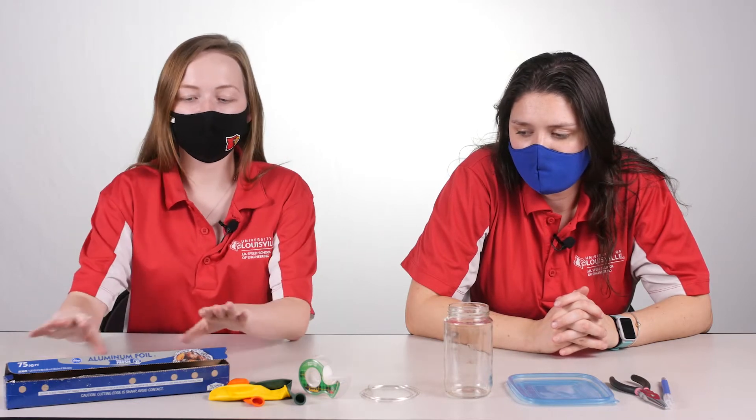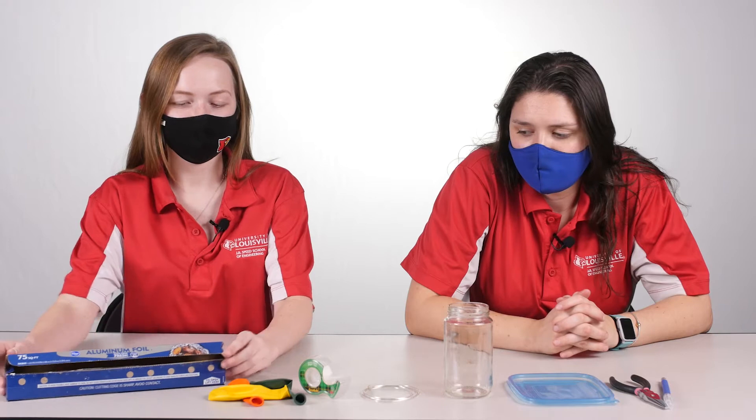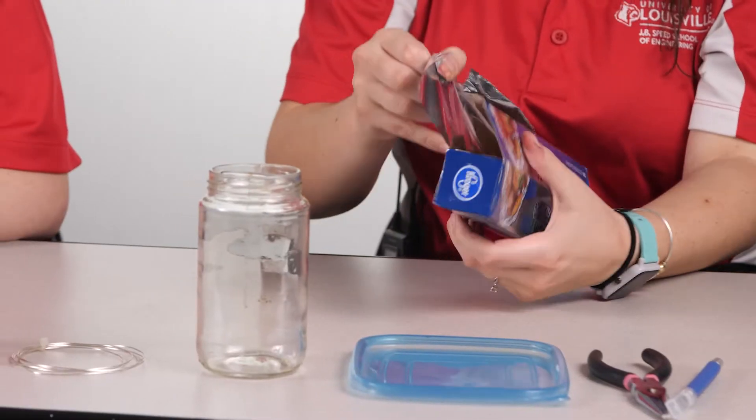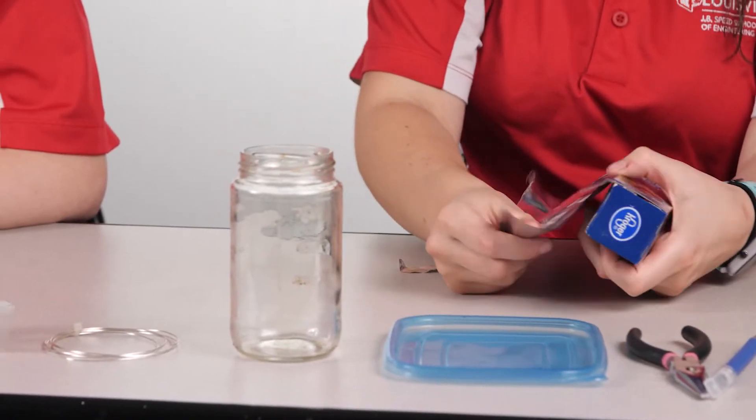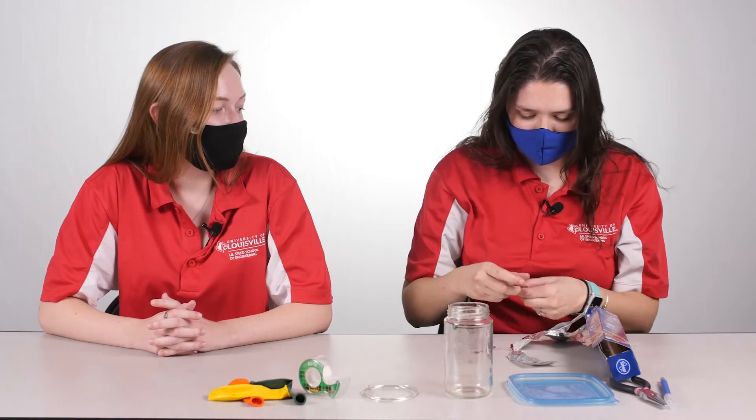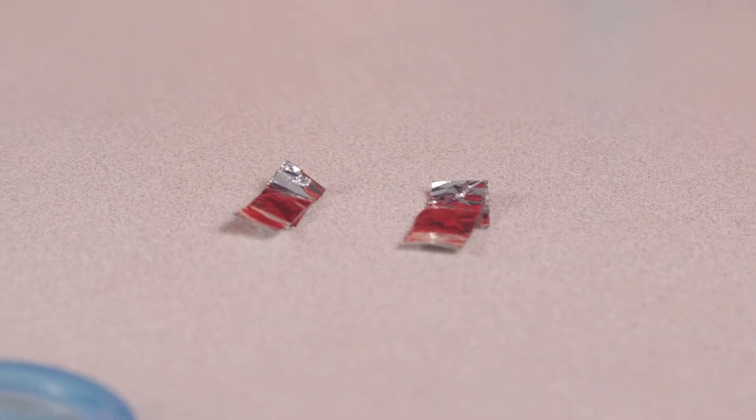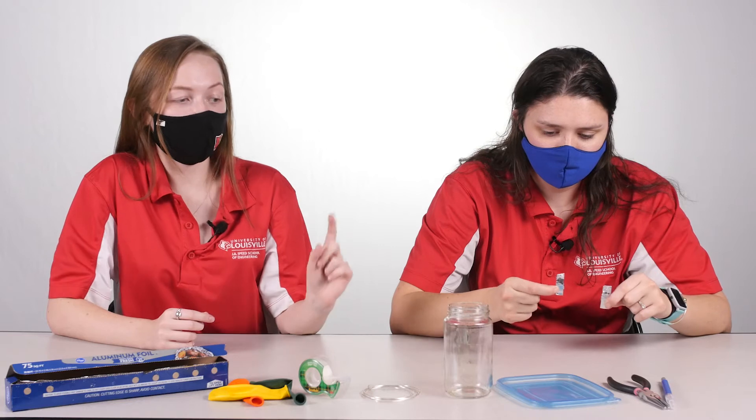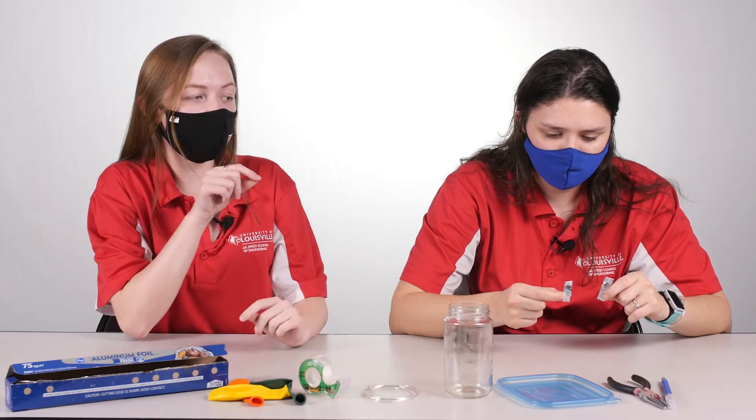We're going to have Emery demonstrate while I tell her what to do. First, we'll be using the aluminum foil. Emery's going to pull out a strip, just a small piece, and then fold it up into little tiny rectangles. So the way Emery folded them was into two small rectangles, and then we used the exacto knife and punched a little hole in the top of both rectangles.